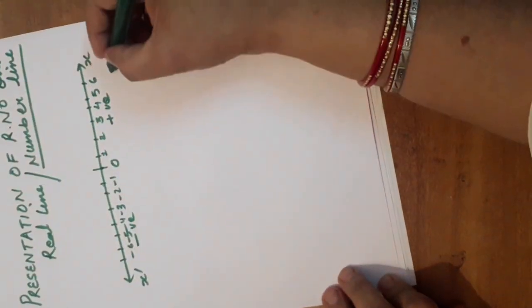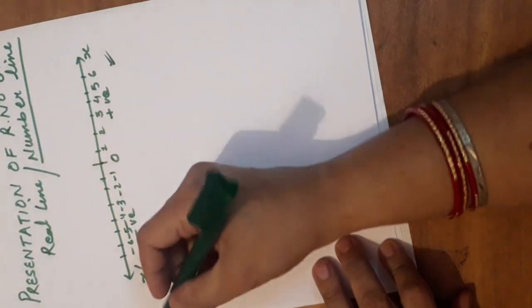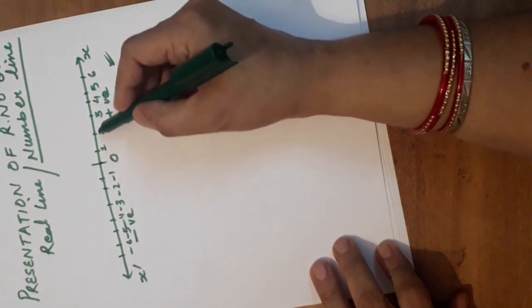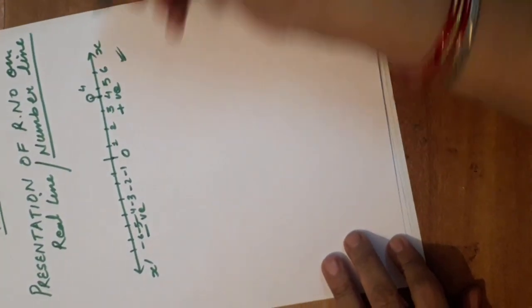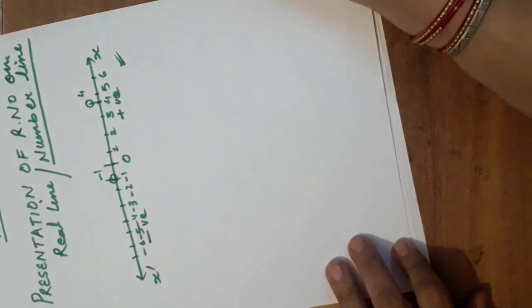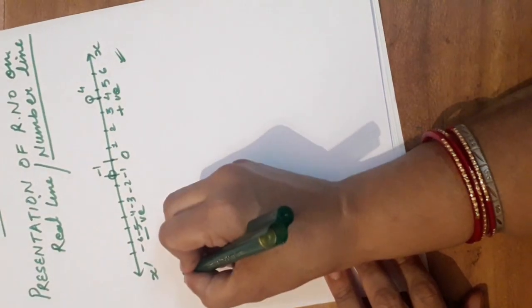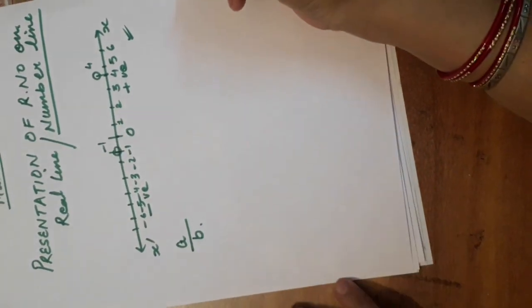So now this time, if anybody tells you to place where is 4. So simply you can say that this is 0, 1, 2, 3, 4. You can say this is 4. If anyone asks where is minus 1, so here it is. This is minus 1. But this time we are to place a number in the form of A by B. In your book, the example is given.